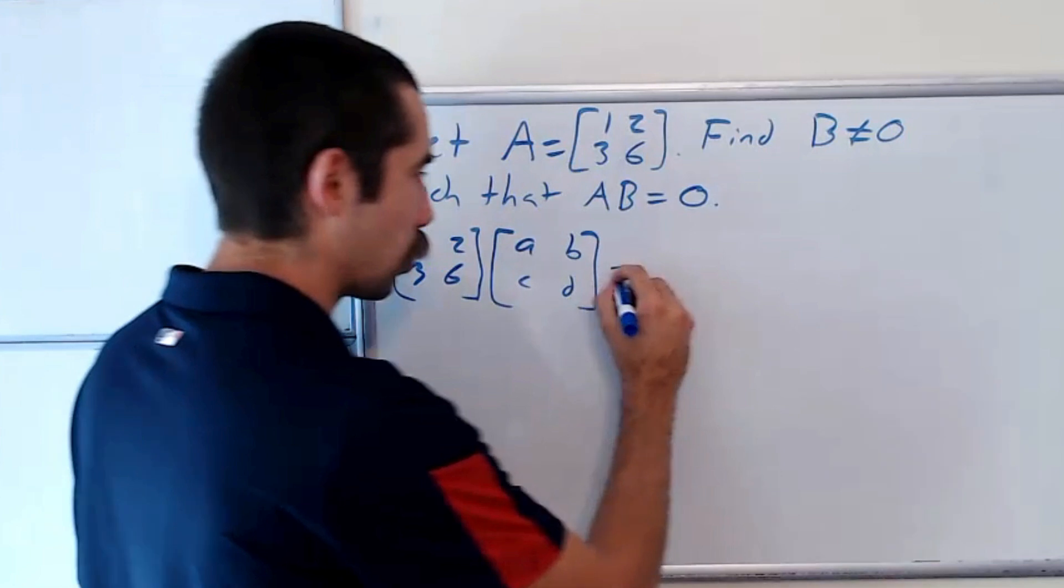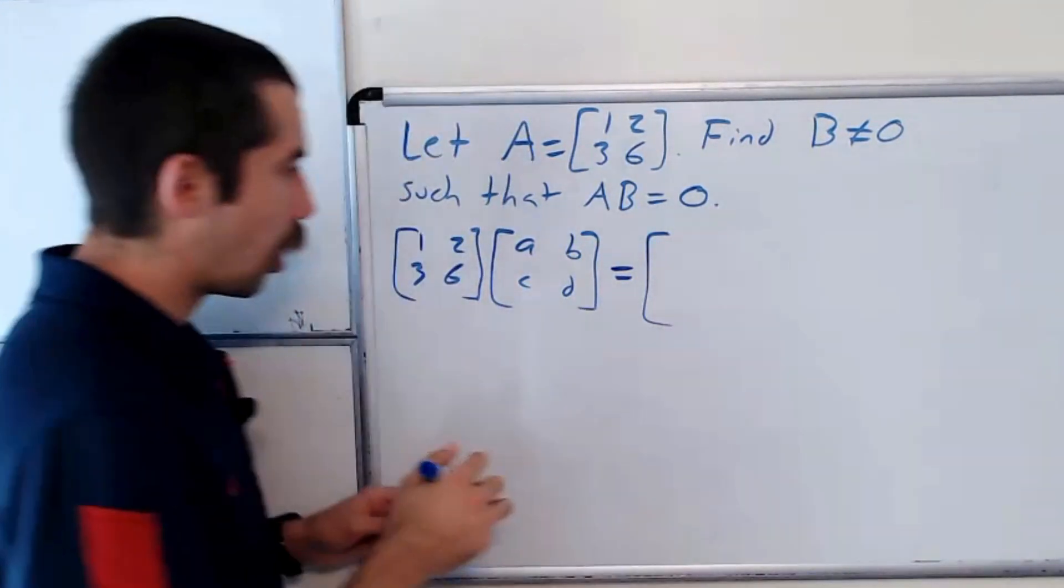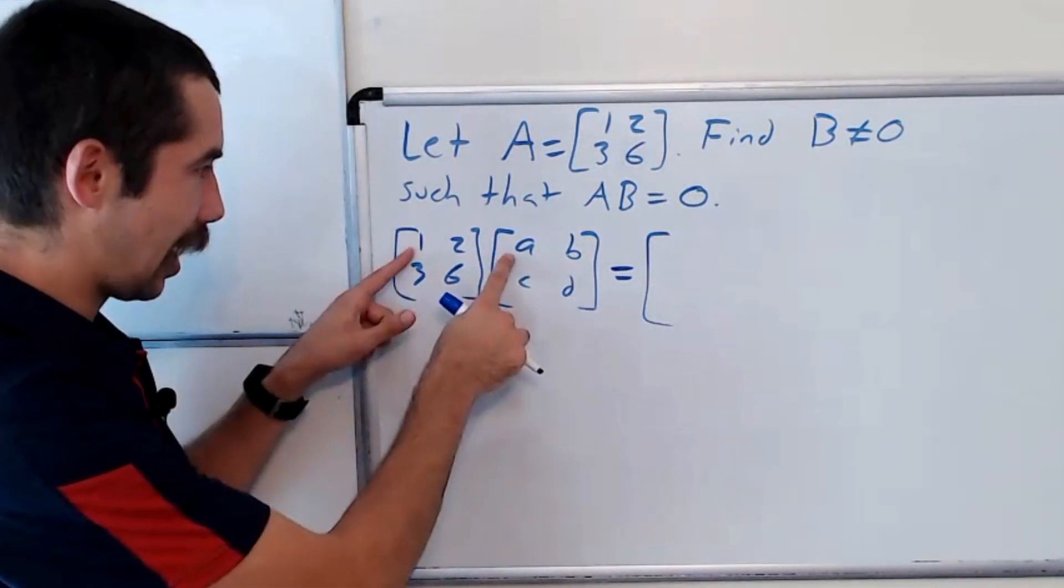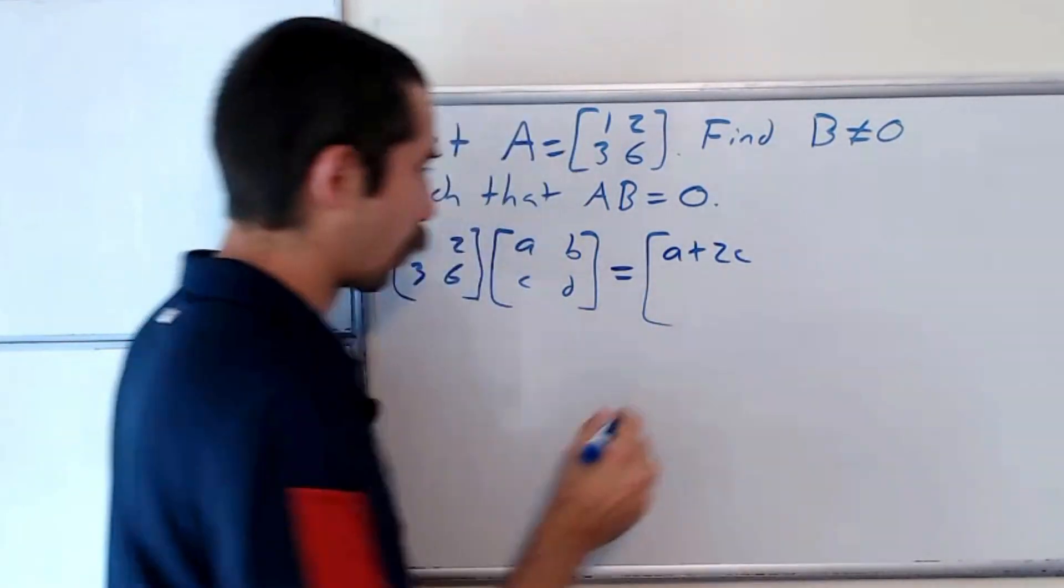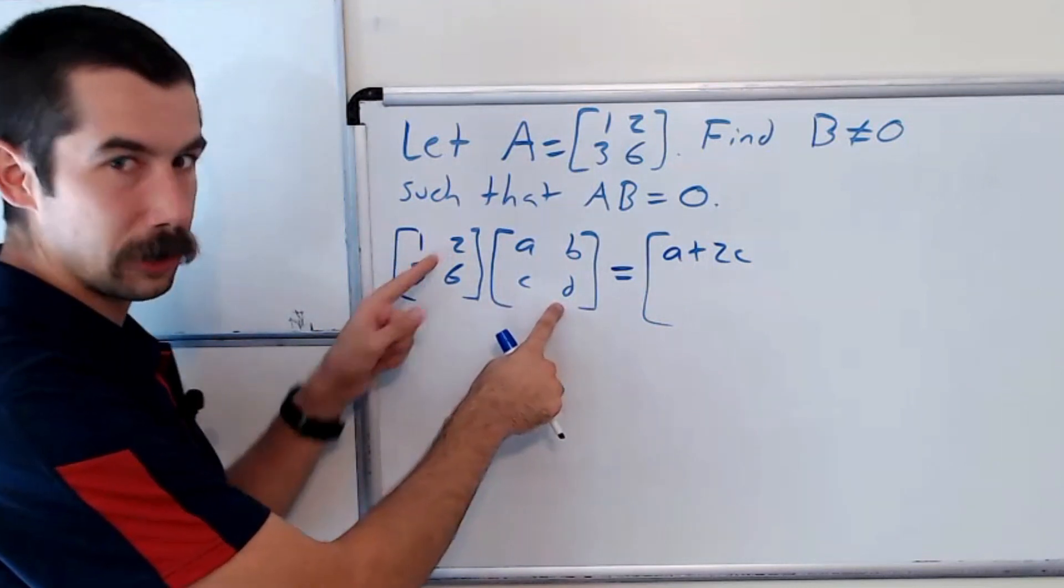So let's do this matrix multiplication. Our 1,1 entry is a plus 2c. Our next entry is b plus 2d.